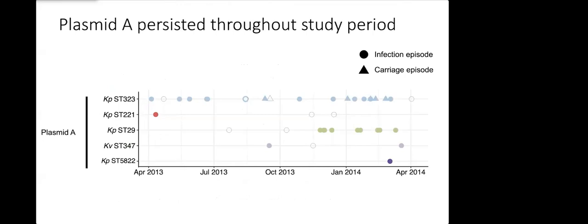What we found was that plasmid A was present throughout the entire study period. The first thing that we noticed was that Klebsiella ST323, which is the top row here in this graph in blue, was carrying the plasmid throughout the entire study period. Each of these points is colored in if the genome is positive for plasmid A and we can see there's ST323 all the way along.